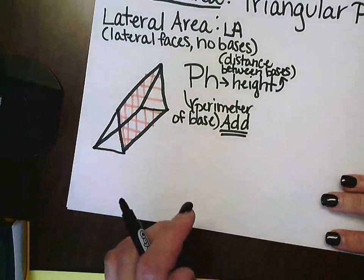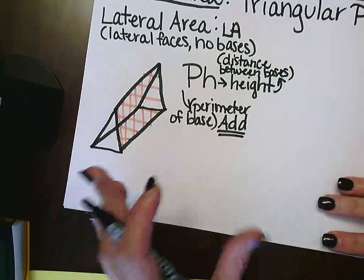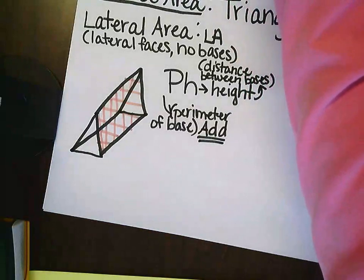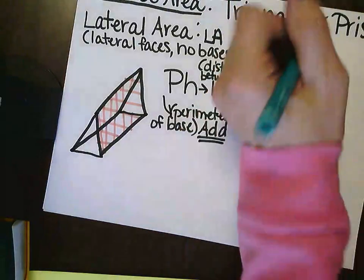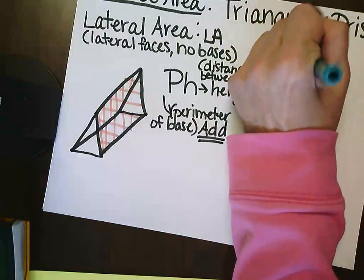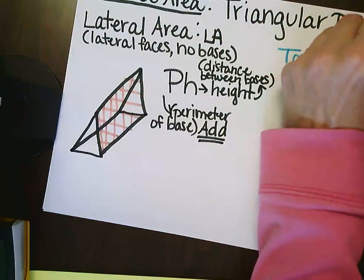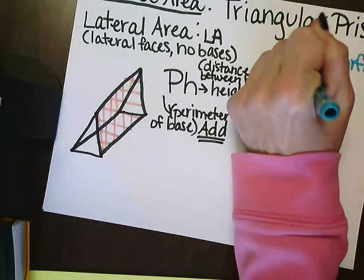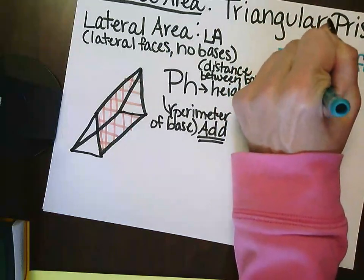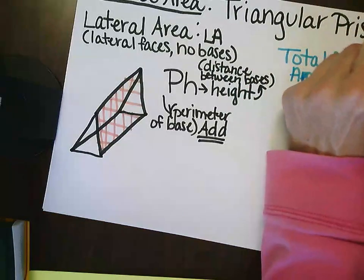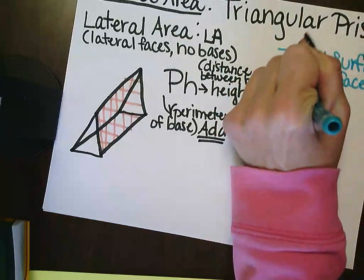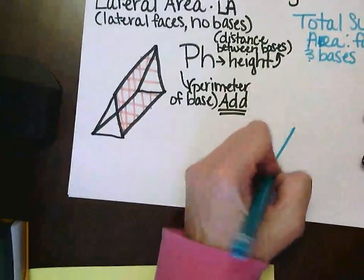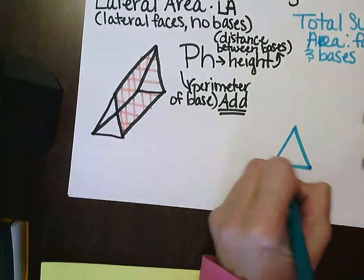So P times H, and this is how we will solve for our lateral area. Now, total surface area is going to be our faces and our bases.